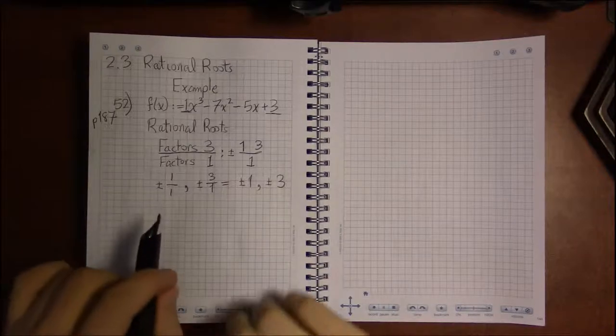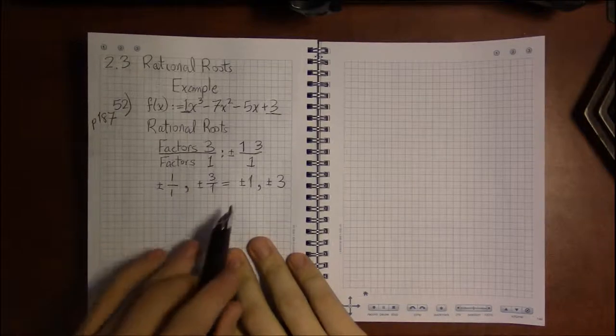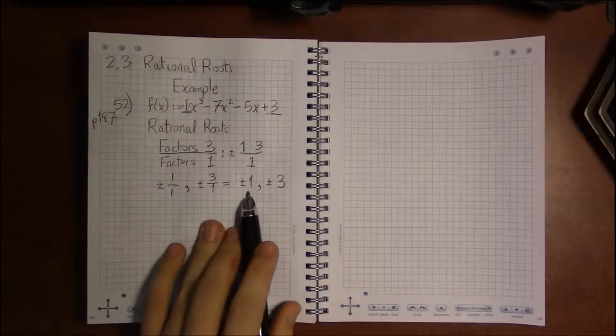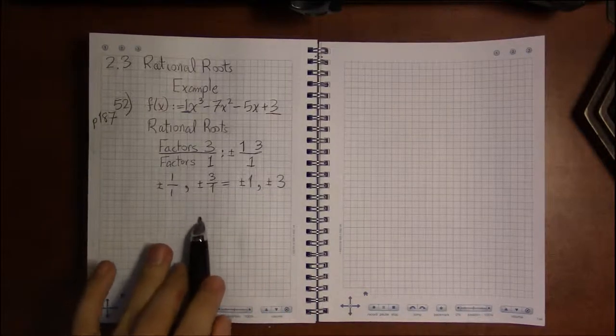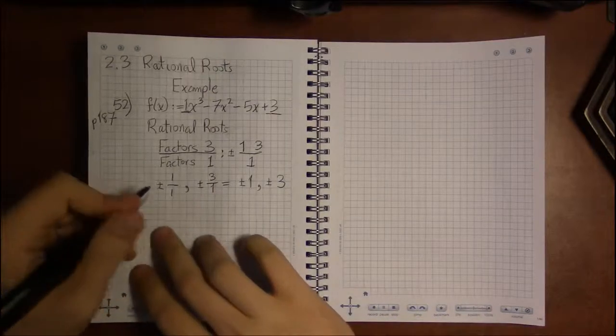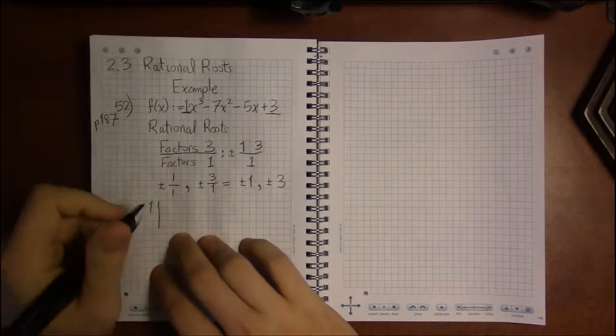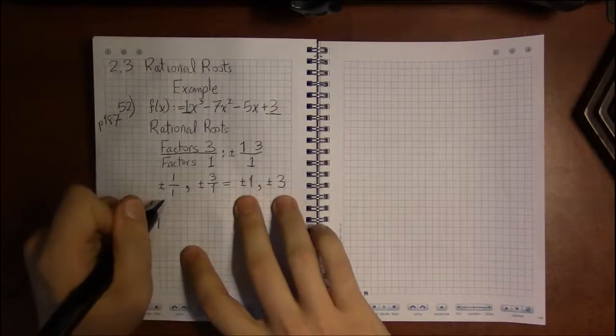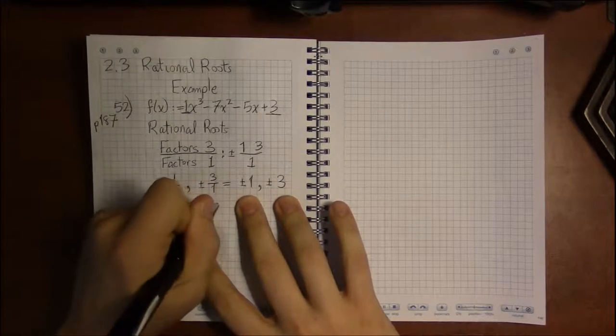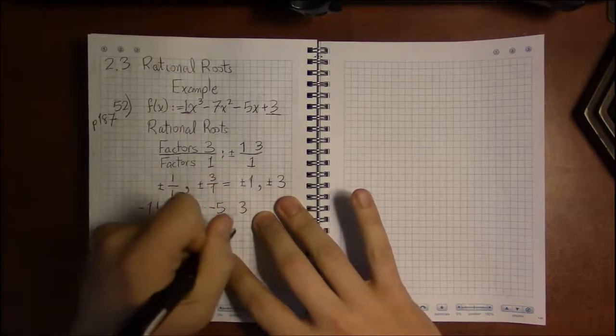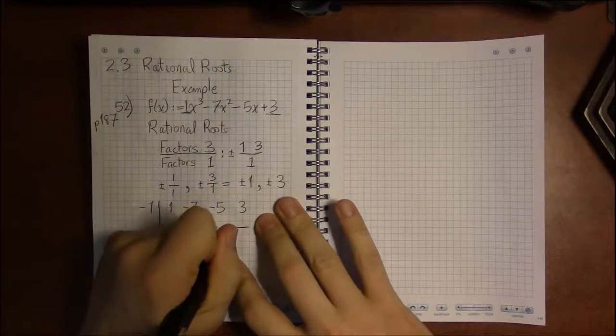Looking at my cheat sheet, I know that minus 1 is going to be a solution here. I would recommend using a graphing calculator to kind of get a sense of, oh, it looks like minus 1 is a zero, and trying that out. Because a graphing calculator is a very easy way of quickly identifying which of these rational numbers look like they're actually zeros.